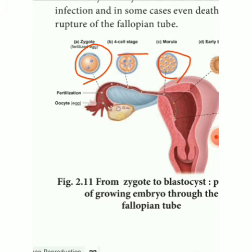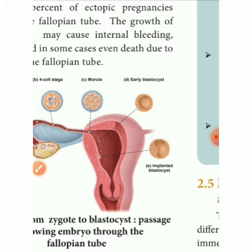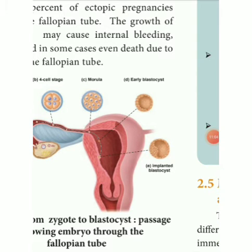Under the influence of progesterone, smooth muscles of the fallopian tubes divide and the embryo takes four to five days to travel. Four to five days after fertilization, the uterine wall begins to be prepared. A fluid-filled hollow ball of inner cells is called a blastocyst. You can see in the picture how the blastocyst is formed — the cells divide to form a hollow fluid-filled cell structure called a blastocyst.